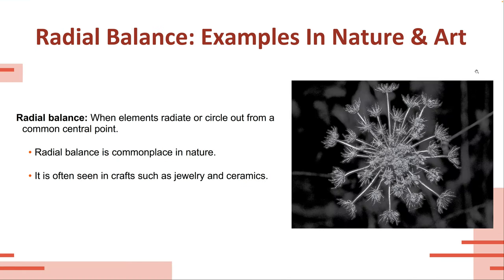Radial balance — one of the most common places we see it is in nature, in snowflakes for example, or dandelion puff balls, which have one central point that everything else radiates out from. Radial balance has one central point that everything else radiates out from. It's technically asymmetrical but roughly symmetrical — because it's nature, there will be some dissimilarities, but in general it's relatively balanced.